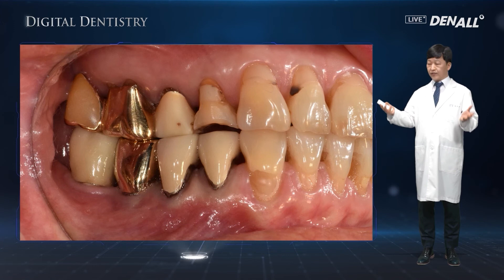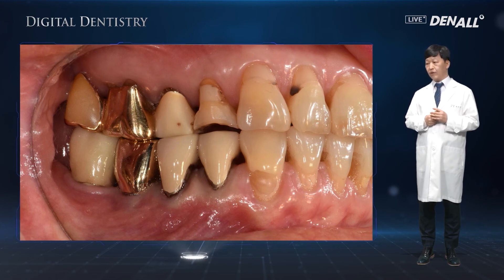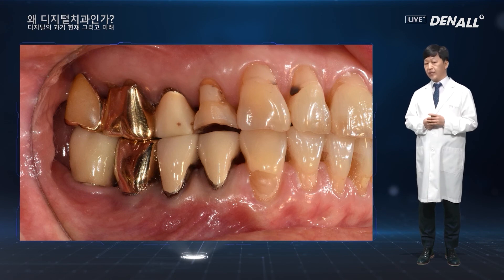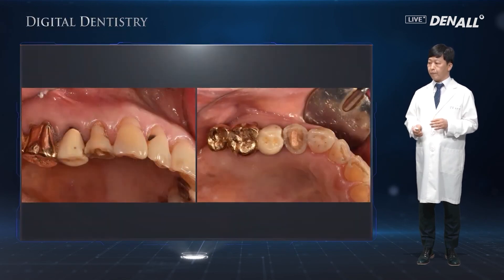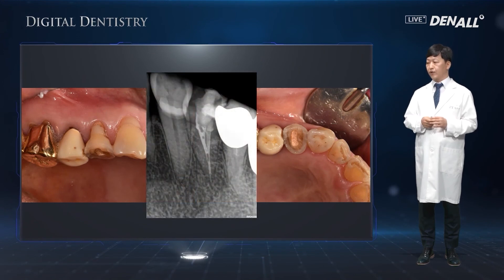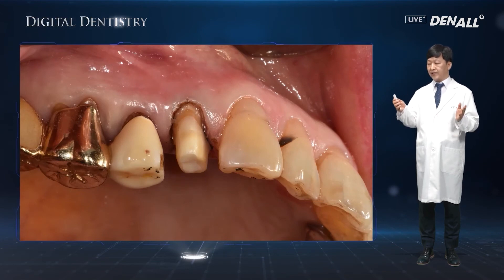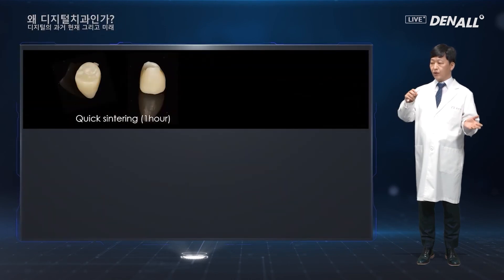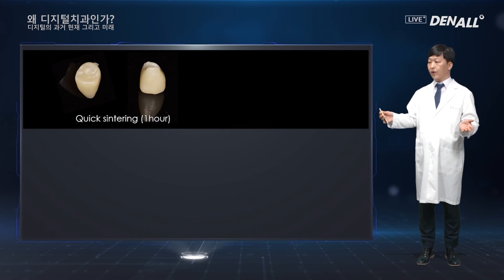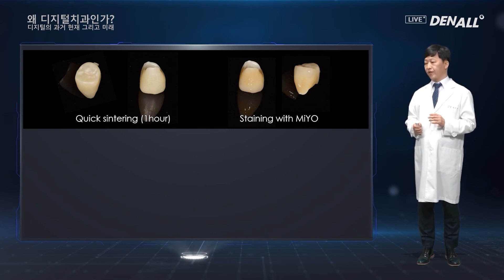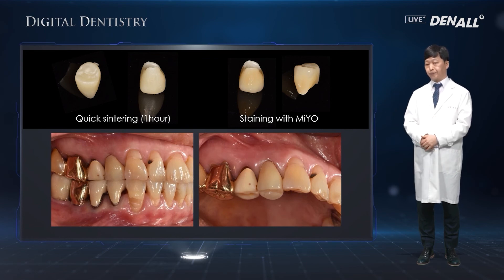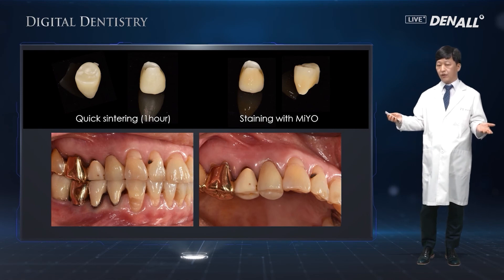A different patient came from northern Gyeongsang region — eight hours round trip — making it very difficult to come in due to distance and cost. Endo treatment was done once prior, and the patient came in at 10 a.m. that same day. Endo treatment was completed, and right after that the crown was prepped and scanning was done. At 12 p.m., crown was designed. Quick sintering mode was used. Within an hour, the Mio stain kit was used and staining was done to fit the patient's natural dentition. At 5 p.m., the final crown was set — a very natural-looking prosthesis was provided.